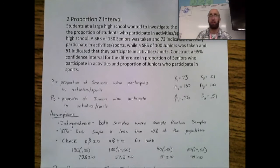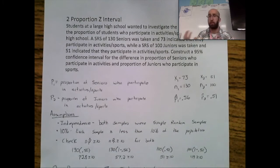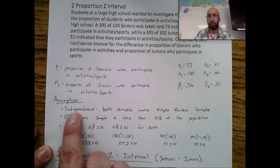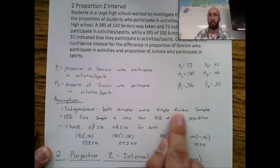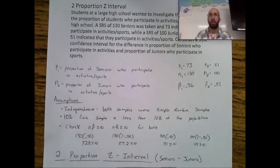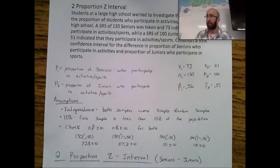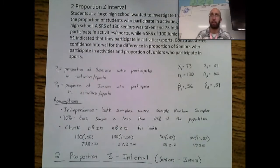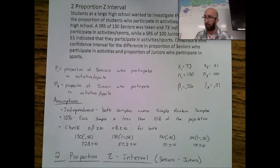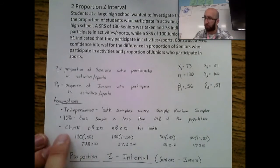I need to make sure my assumptions are in place so that everything works out when using Z-scores and the confidence interval formula. Three things I check: first, independence — both samples were a simple random sample, so you need to check independence for both. Second, the 10% condition — each sample must be less than 10% of the population, so I'm checking that 130 seniors is less than 10% of all seniors and 100 juniors is less than 10% of all juniors.